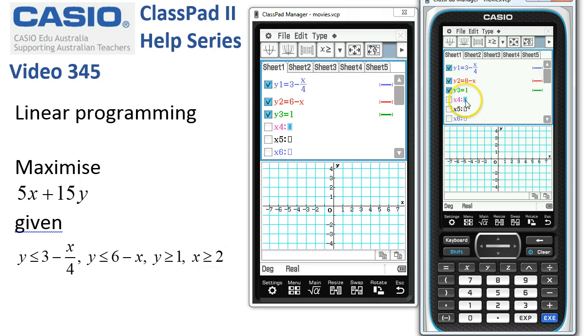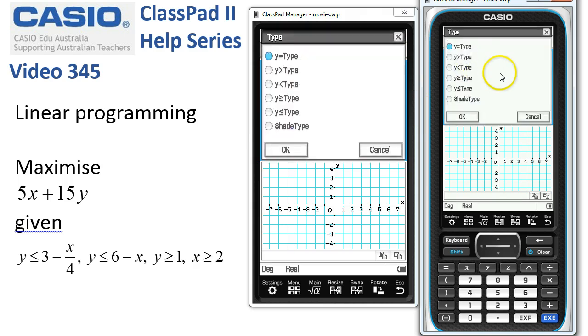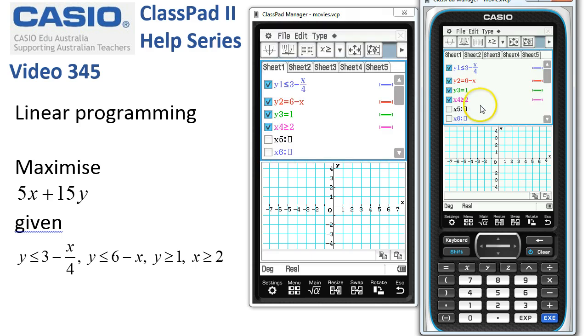And now when I put in 2 here, you can see that this one is set up and ready to go. To change these to the required type, the first one has to be less than or equal to. I can tap on the equal sign and choose the y is less than or equal to type and confirm it.